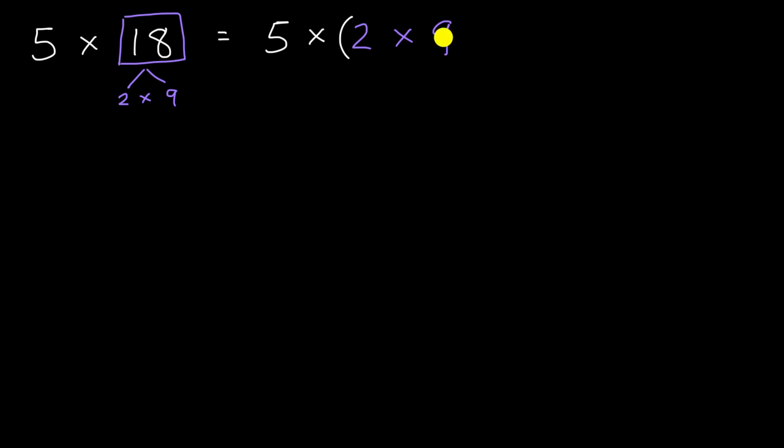Before, you did the 2 × 9 first, and now you're telling me that you're going to change the order, that you're going to say, hey, let's multiply the 5 × 2 first. Is that okay? And the simple answer is yes, it is okay.